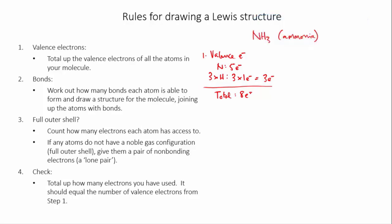The second step is to work out how many bonds each atom is able to form, and then to use that to draw a skeleton structure for the molecule where we join up the atoms with the bonds. So we know that because nitrogen is in group five, and it has a valence of minus three, it usually forms three bonds. And we know that hydrogen is in group one, and it usually forms one bond.